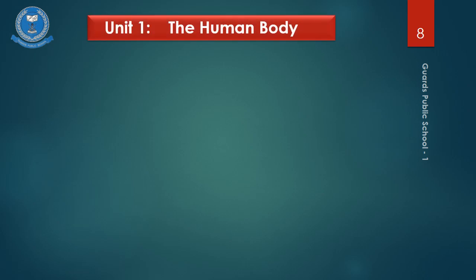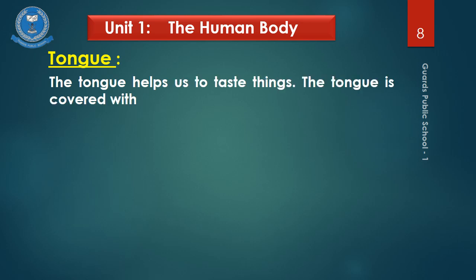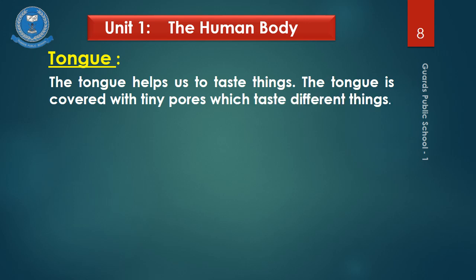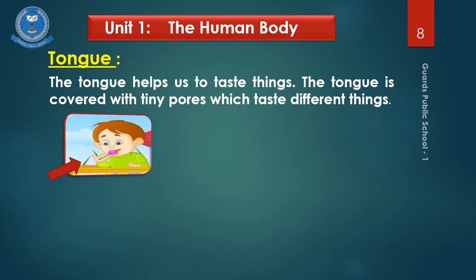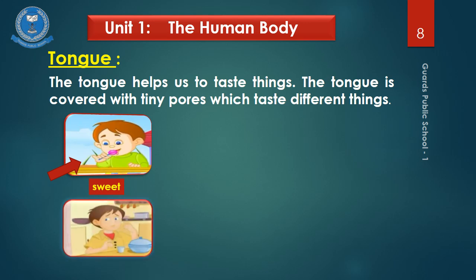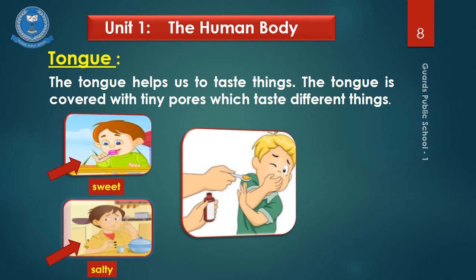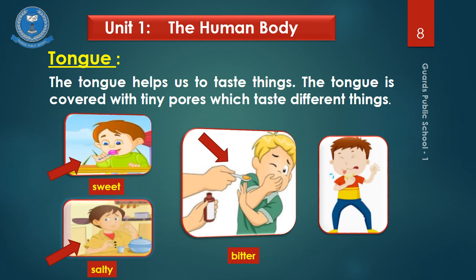Now come to another sense organ, which is the tongue. The tongue helps us to taste things. The tongue is covered with tiny pores which taste different things. Look at the picture — the boy is eating candy, and its taste is sweet. In this picture, the boy is eating food and the food is very salty. Now the boy is not happy to take medicine because medicine taste is bitter. And this boy is tasting a lemon — its taste is sour. So we can say that the tongue helps us to taste different things.